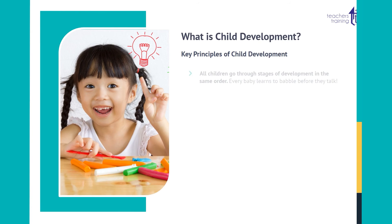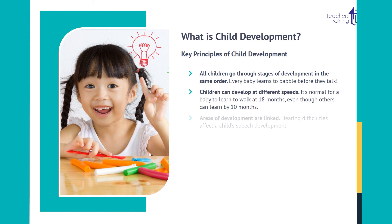Key principles of child development: All children go through stages of development in the same order. For example, every baby learns to babble before they talk. Children can develop at different speeds — it's normal for a baby to learn to walk at 18 months, even though others can learn by 10 months. Areas of development are also linked; for instance, hearing difficulties can affect a child's speech development.